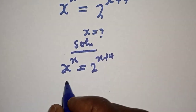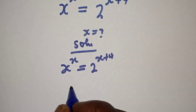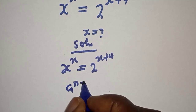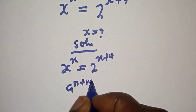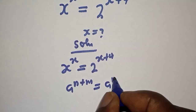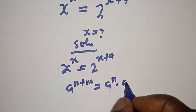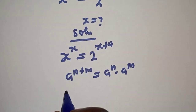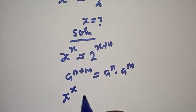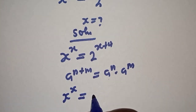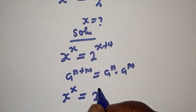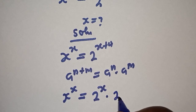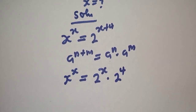Take note of this exponential rule: if you have a raised to power n plus m, this is equal to a raised to power n multiplied by a raised to power m. So, this gives us s raised to power s is equal to 2 raised to power s multiplied by 2 raised to power 4.